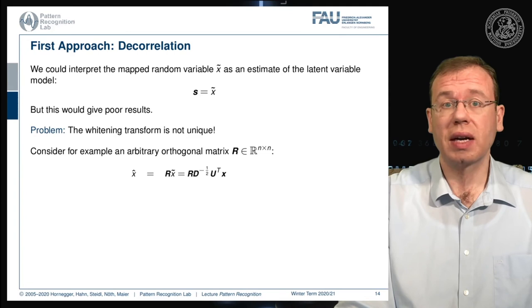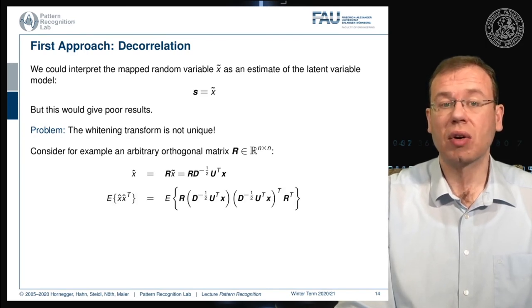Now I can consider an arbitrary orthogonal matrix R and simply transform our X tilde into some X hat. And we simply add this matrix to the feature transform. If you look at this closely, then you can see that I can essentially apply the same trick for the expected value of X hat.